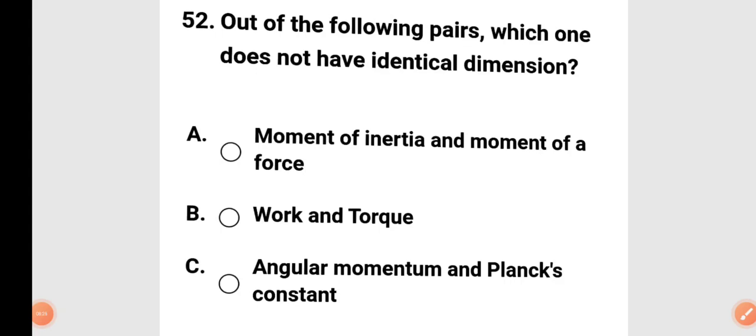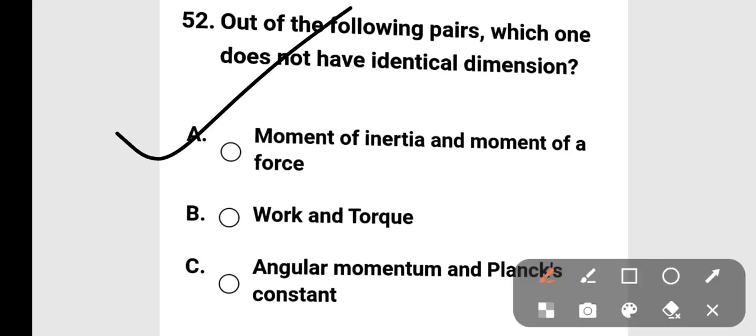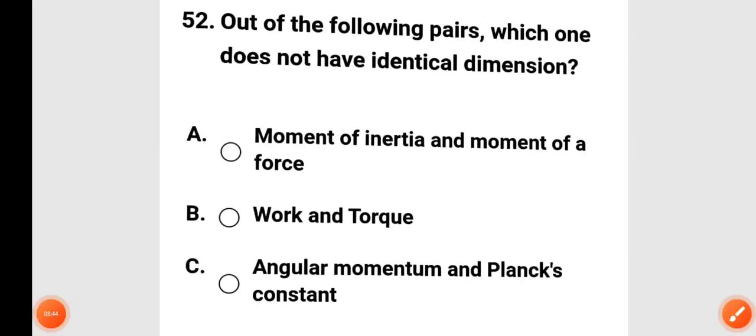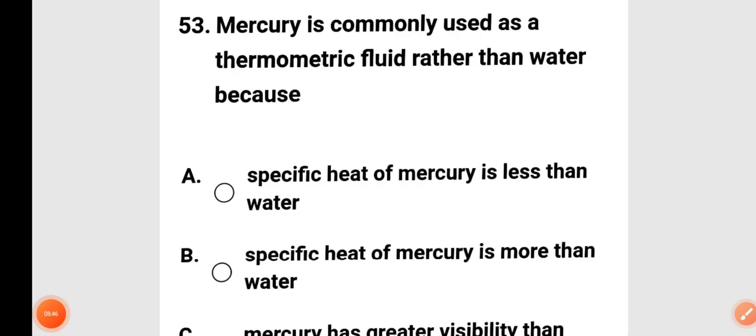Next question: out of the following pairs, which one does not have identical dimensions? The options include moment of inertia and moment of force, work and torque, angular momentum and Planck's constant. Option A is correct: moment of inertia and moment of force do not have identical dimensions.